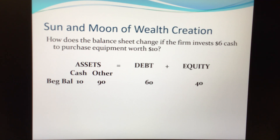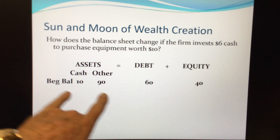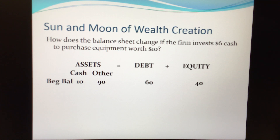Here's one more example. We talked about, with the example with my buddy Keith Riley, about how as the value of that car changed, the value of the equity changed but the debt didn't. Now we have a better idea of why. How does the balance sheet change if the firm invests $6 cash to purchase equipment worth $10? Here we have a very simple balance sheet: cash of $10, other assets of $90 — which could include receivables, inventories, fixed assets, and so on. Debt is $60, equity is $40, and the main thing is that this has to balance.